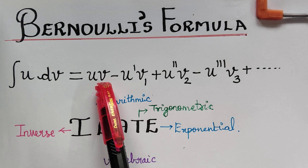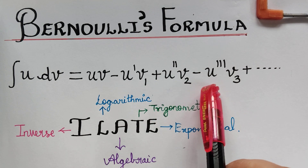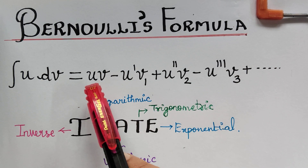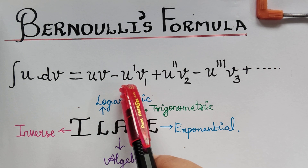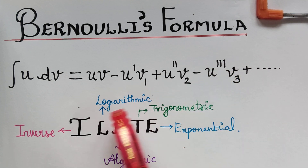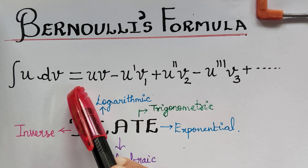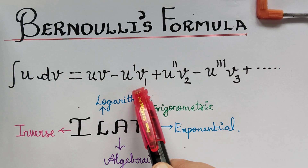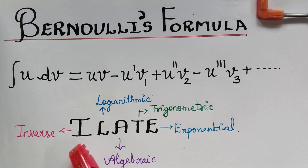In the first term we have uv multiplied together, and in the second term u-dash times v1. Here u is a function, and u-dash, u-double-dash, u-triple-dash represent successive differentiations of u. Similarly, v is the integral of dv, v1 is the integral of v, v2 is the integral of v1, v3 is the integral of v2, and so on.